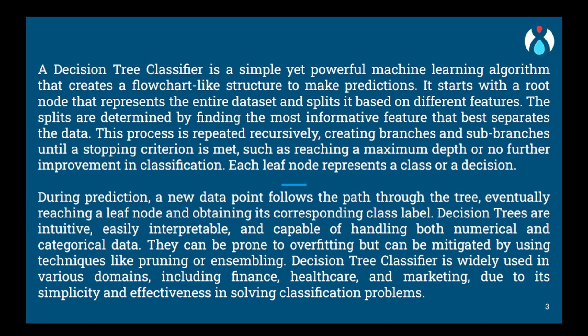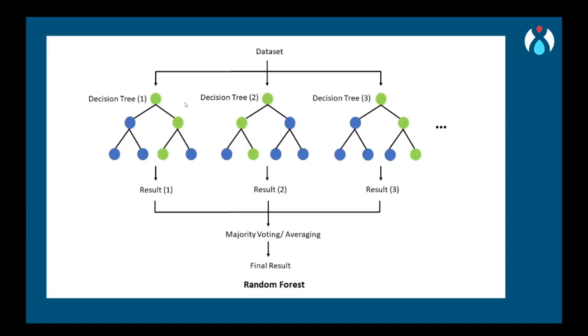The decision tree is a model that takes the complete dataset and then divides it into sub-parts, like creating a tree — creating roots of the tree. The dataset is completely divided into trees. A group of decision trees is a random forest, which we will discuss later in coming videos. For now, let's focus on the decision tree.